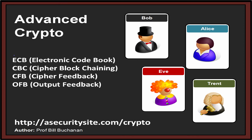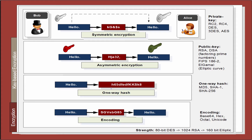Let's have a look at the differences between electronic codebook, cipher blockchaining, cipher feedback, and output feedback. What we should see in this presentation is that the first method really isn't very good when it comes to cryptography, and the other methods provide a much better way of actually creating our encryption.